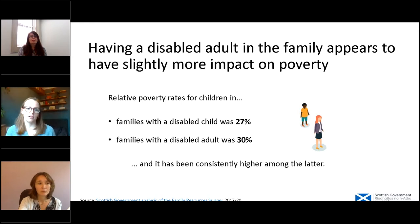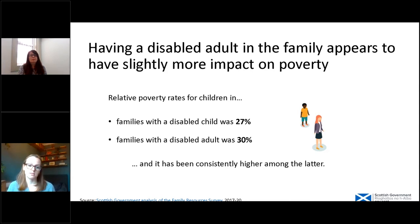We also know that having a disabled adult in the household tends to make it slightly more likely the family might be in poverty. For families where there's a disabled adult, the relative poverty rate is 30%, and where there's a disabled child it's 27%. This is likely related to the fact that it's parents who will be bringing income from employment into families.